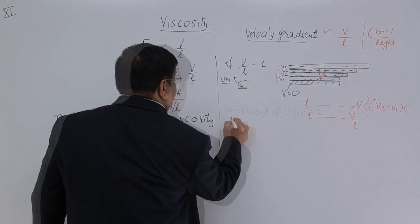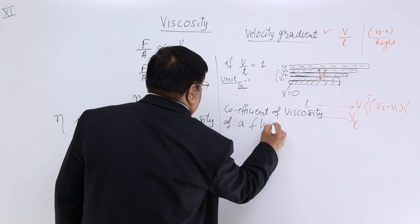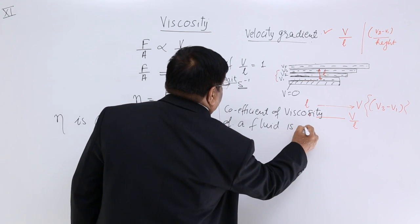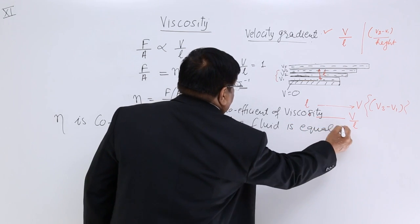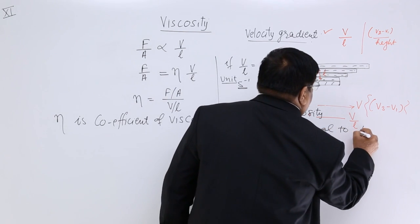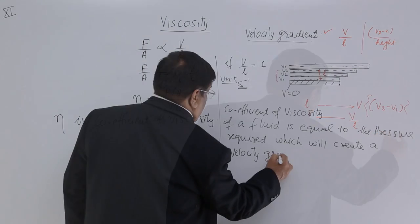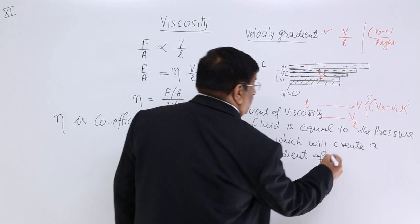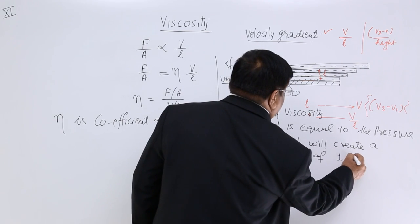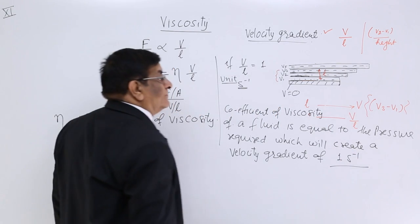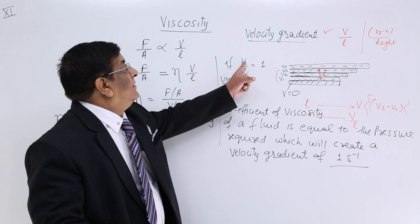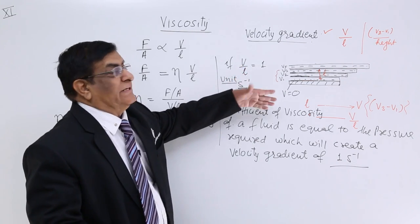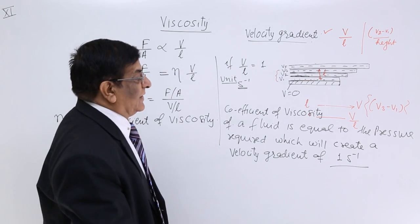So coefficient of viscosity of a liquid is equal to the pressure required which will create a velocity gradient of 1 per second. That is 1 meter per second per meter, that is 1 per second.